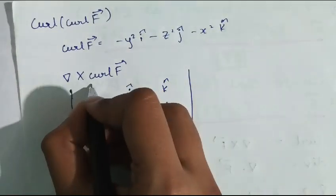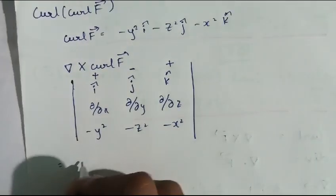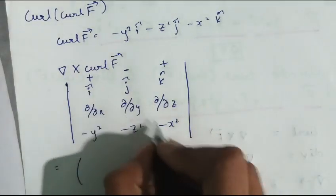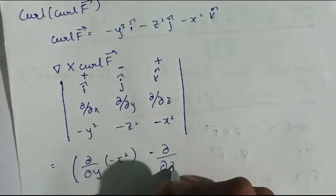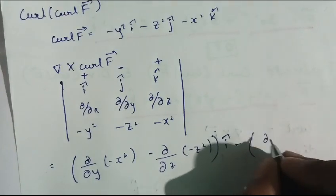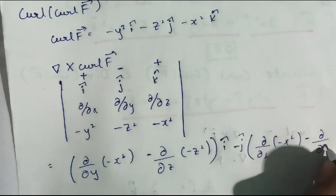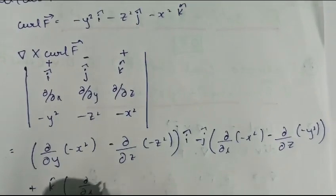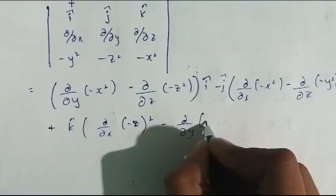Solving this determinant using the plus-minus-plus sign convention: for î-cap, we consider (∂/∂y)(-x²) minus (∂/∂z)(-z²); for ĵ-cap, we take minus [(∂/∂x)(-x²) minus (∂/∂z)(-y²)]; for k̂-cap we take (∂/∂x)(-z²) minus (∂/∂y)(-y²).